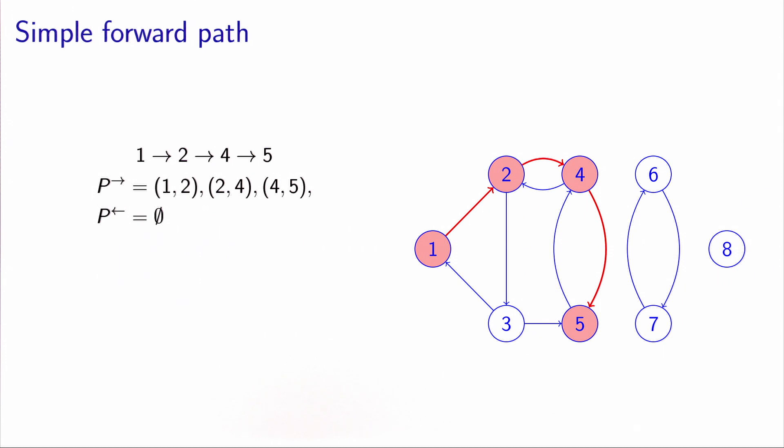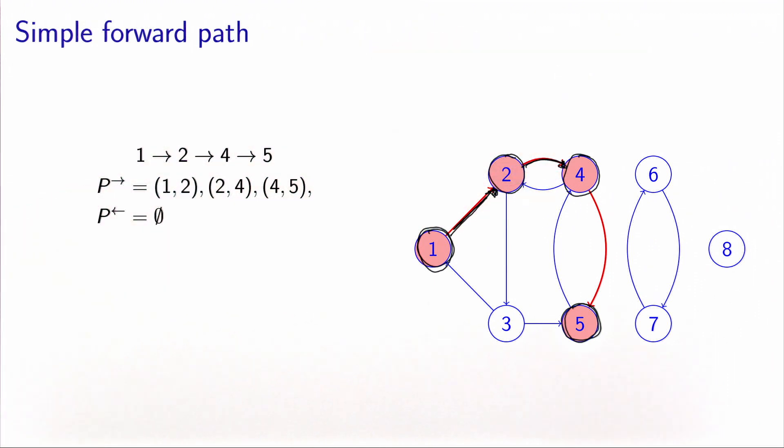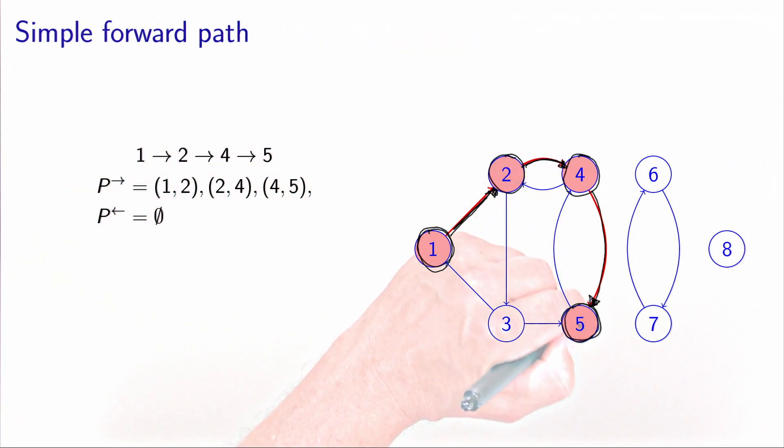Let's take some examples. Here we have a simple forward path that connects node 1 to node 5. The sequence of the nodes is 1, 2, 4, 5, and the arcs that connect them are the arc 1, 2, which is here, 2, 4, which is this one, and 4, 5, which is this one.